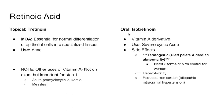Third line, if topical doesn't work, is oral retinoic acid, called isotretinoin — a vitamin A derivative used for severe cystic acne. It's last line because it has a horrible teratogenic profile; it crosses the placenta and causes cleft palate and cardiac abnormalities. It's restricted for patients who have failed topical vitamin A, oral antibiotics, or topical antibiotics. To prescribe isotretinoin, women require two forms of birth control — something the test makers will heavily test.